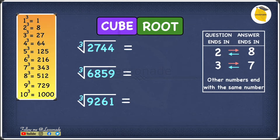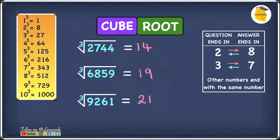Did you guys know that the cube root of 2744 is 14, the cube root of 6859 is 19, and the cube root of 9261 is 21? If you guys are wondering how I did that, don't worry — I will show you in this video.